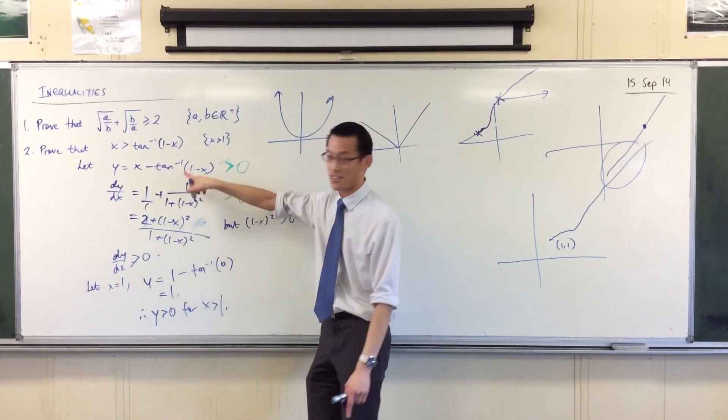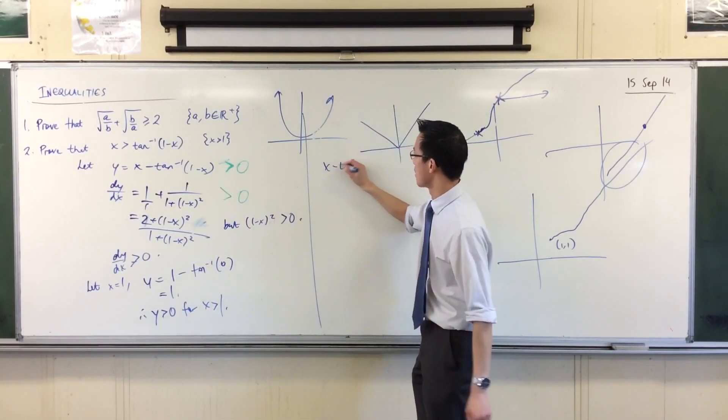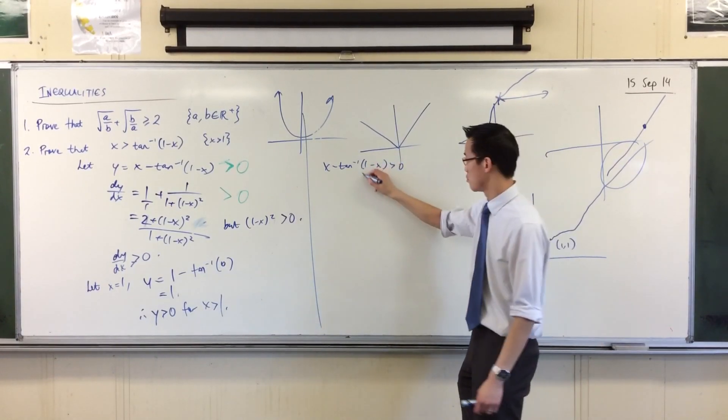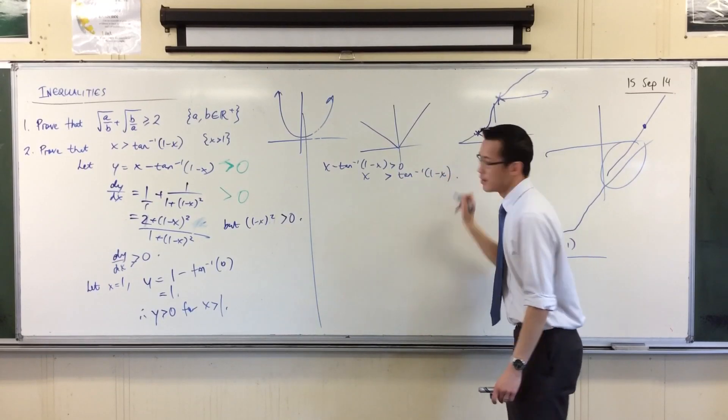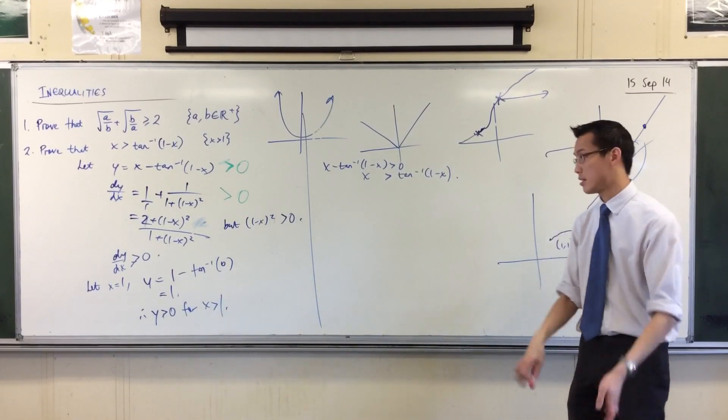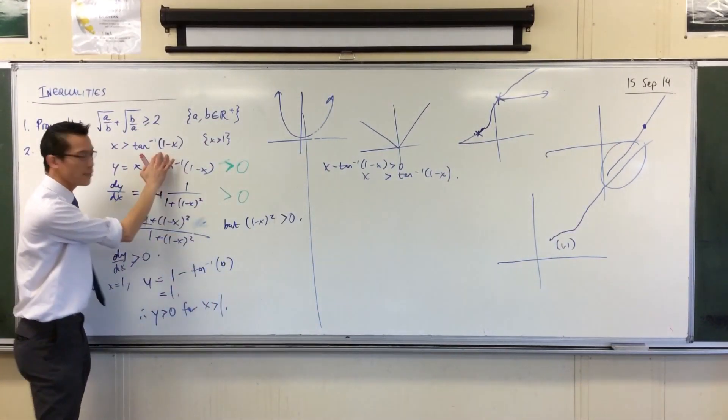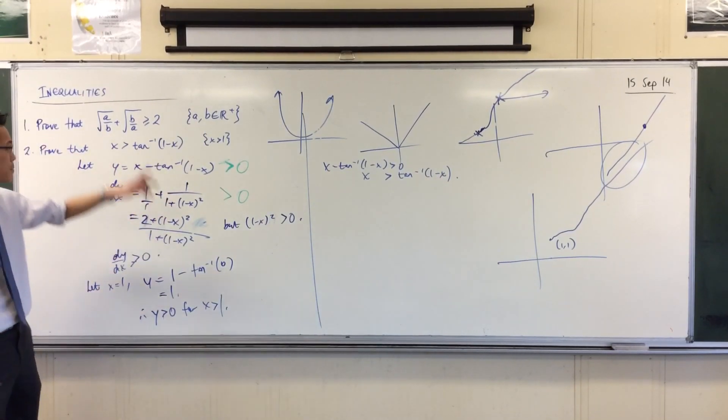And since y, I define to be this, therefore, x minus tan inverse of that thing is greater than 0, and now you just move the other guy over. Done. Now, that's the standard way. When you see trig, don't panic. Particularly inverse trig, because inverse trig just disguises algebra, and we can deal with algebra just like we did before.